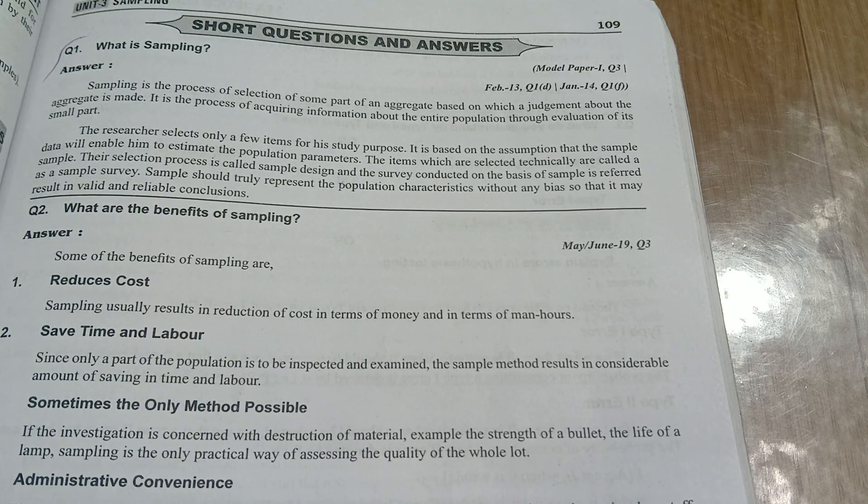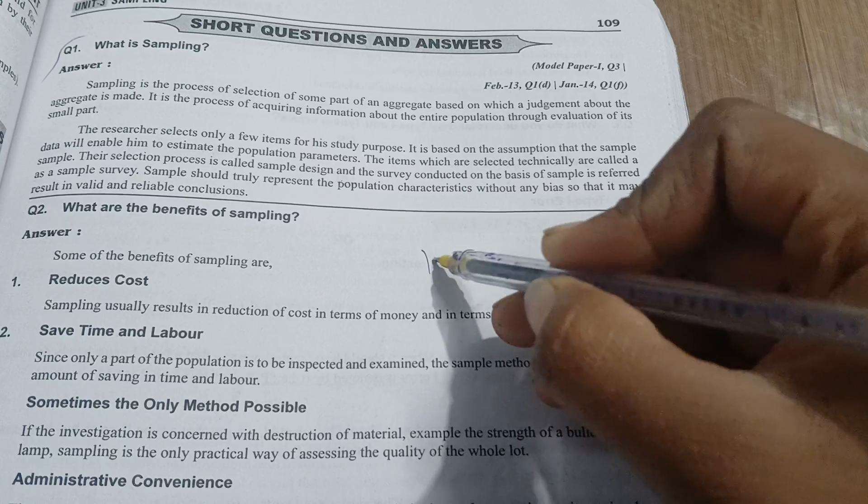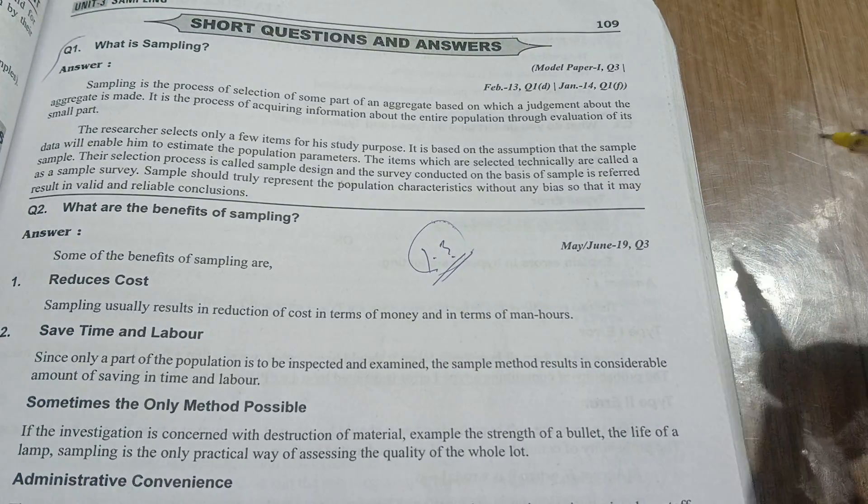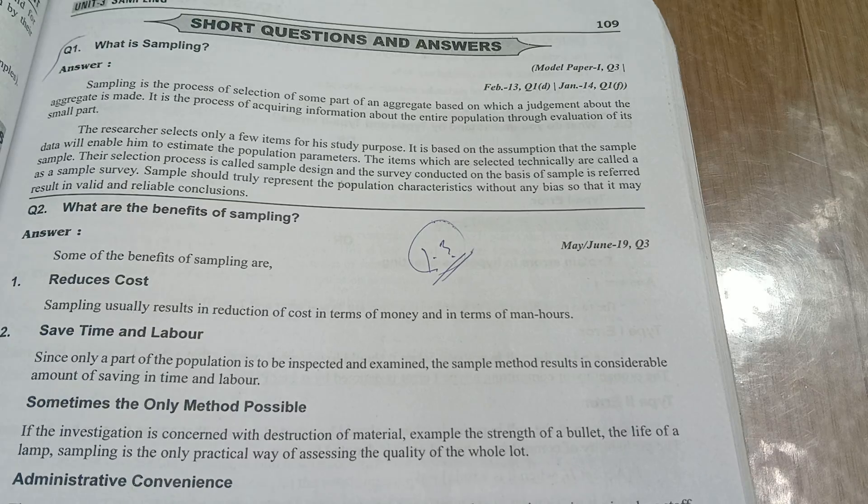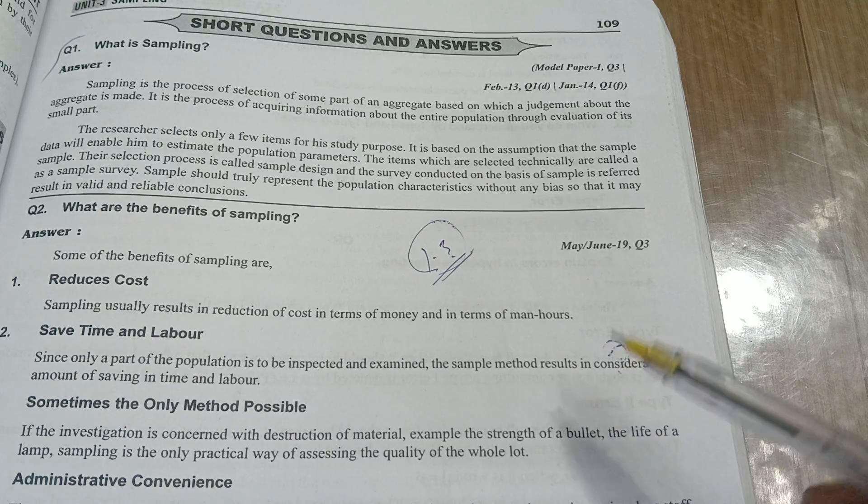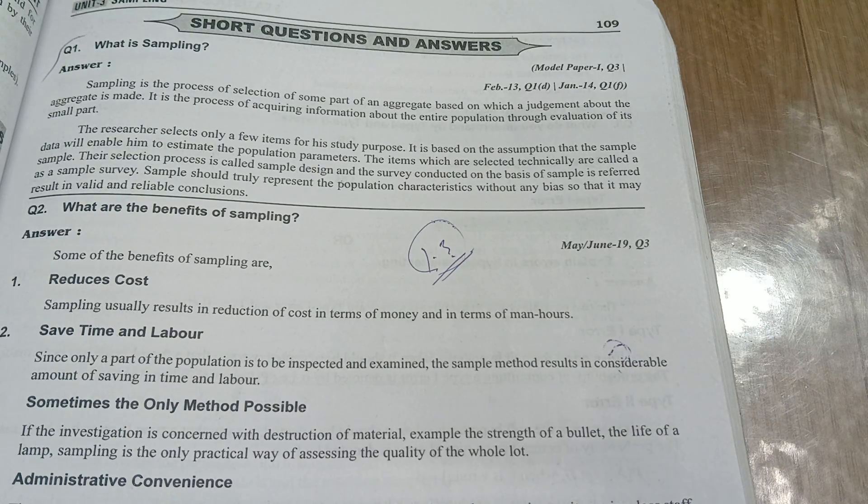For example, it is a process of acquiring information about the entire population through evaluation of its small part. For example, in India there are 1.3 billion people. It is not that they went to every home and checked. Whatever some part is there, based on that population they are guessing the overall population in India. That is called sampling.